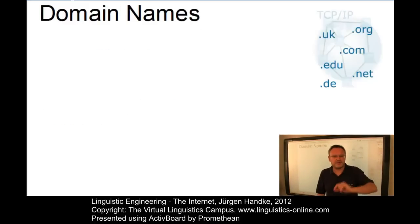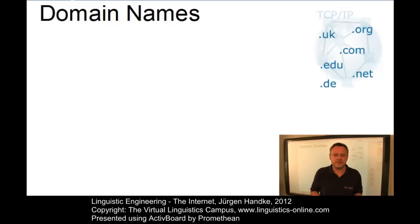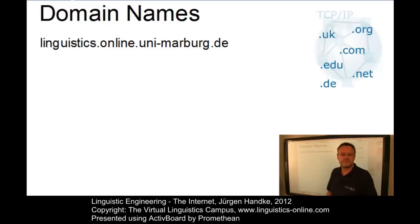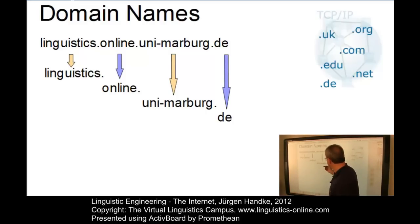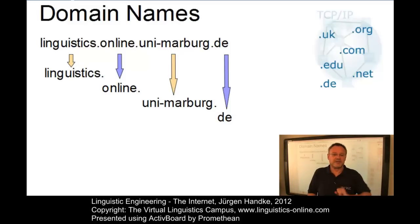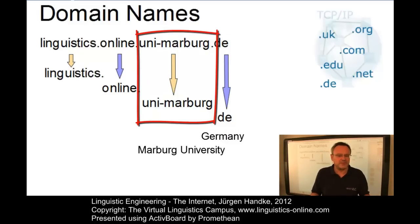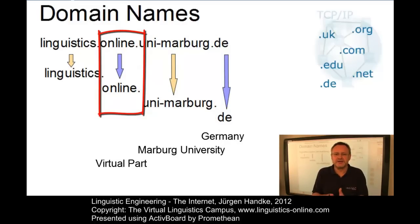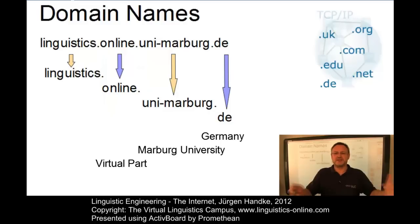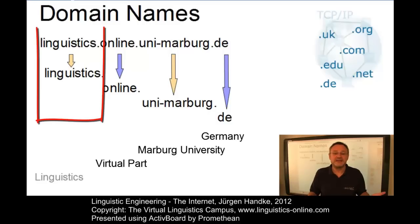And then there are domain names. For the benefit of human beings, each machine on the Internet has not only a unique IP number, but also a unique name. This name consists of dotted domains, for example linguistics.online.uni-marburg.de, and they have to be read from right to left, where the rightmost domain is always more general than its neighbor to the left. The rightmost one here is DE, which stands for Germany. Within Germany, you find an institution called the University of Marburg. Within the University of Marburg, you find a virtual part labeled by the domain part 'online,' and finally within this virtual part there is a linguistics department.